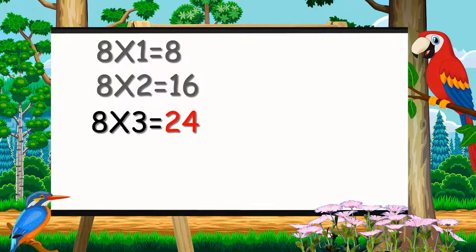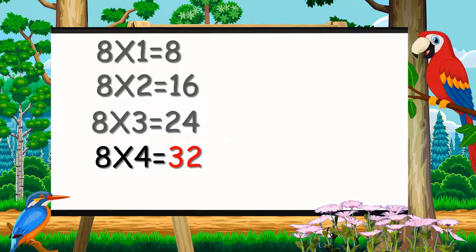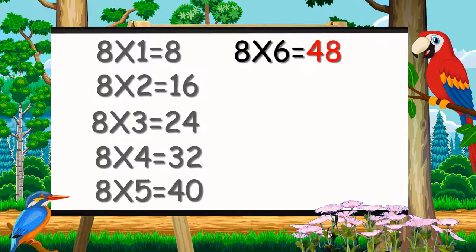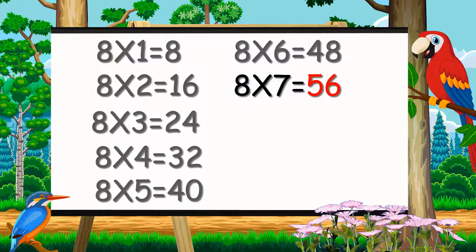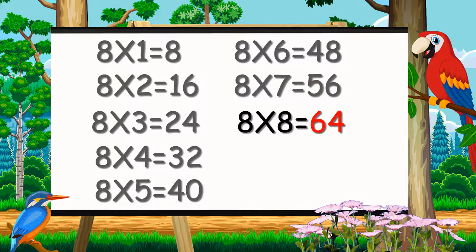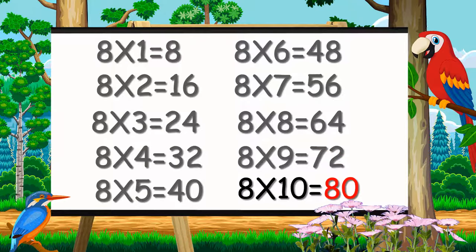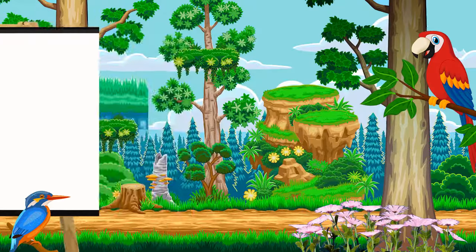8 twos are 16. 8 threes are 24. 8 fours are 32. 8 fives are 40. 8 sixes are 48. 8 sevens are 56. 8 eights are 64. 8 nines are 72. 8 tens are 80.